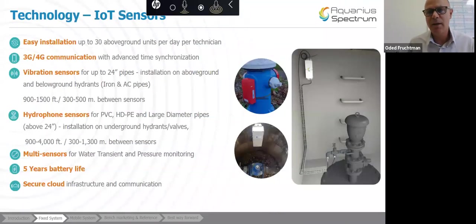In terms of technology, in our case in Aquarius, we support all pipe materials and all diameters. We basically have above ground sensors, below ground sensors. We have multi sensors that also track down pressure transients. Now get to that in the next slide. Every sensor has got a SIM card inside. We support 3G, 4G, depends where we work around the world. Very easy to install. We can install 30 sensors per day and our vibration sensors can go up to 24 inches. Very very sensitive technology. For PVC, HTP and large pipe, we use hydrophones. And we have a battery life that is designed to last five years. And of course, everything we do on the cloud is secure.